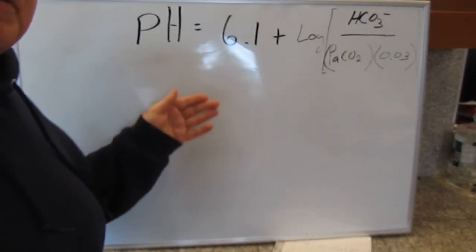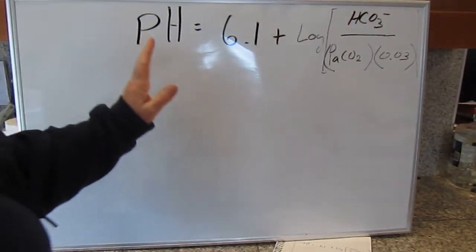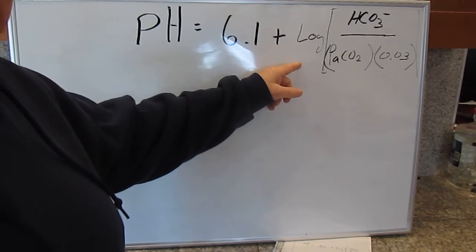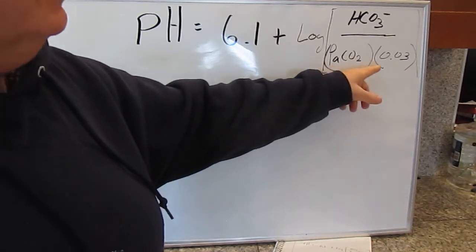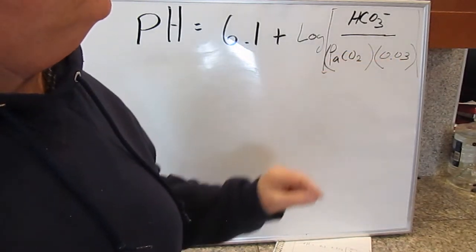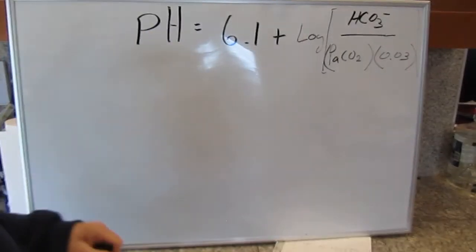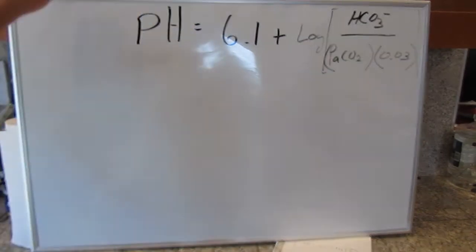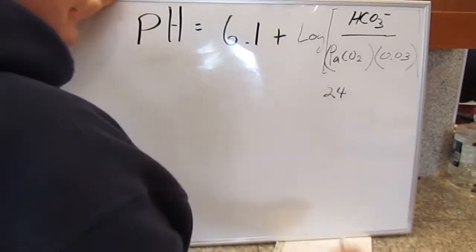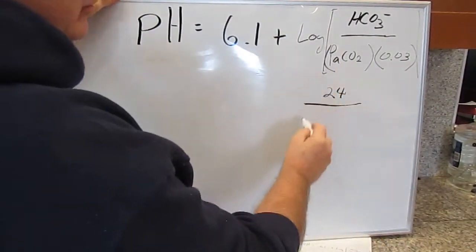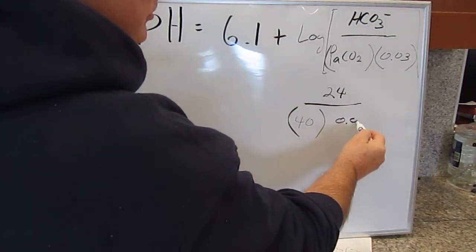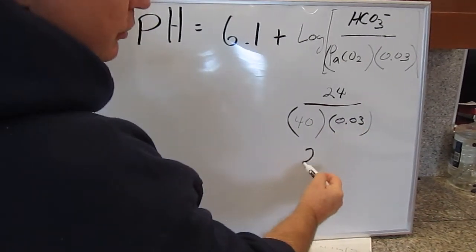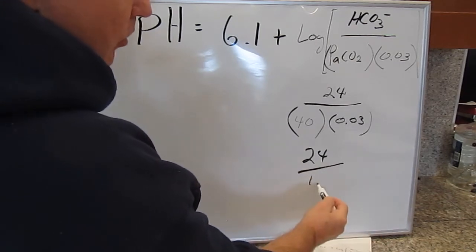The Henderson-Hasselbalch equation for pH as used for respiratory therapy. The equation is pH equals 6.1 plus the log of the bicarb divided by the PaCO2 times 0.03. Now the bicarb must be given, and let's say the normal bicarb is 24. Our normal CO2 is 40 times 0.03, which gives us 24 divided by 1.2.